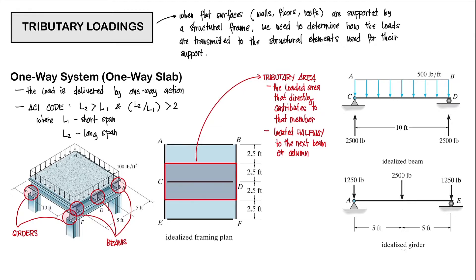So first, let's define what is a tributary loading. A tributary loading is the loading that a specific structural element supports. Your tributary loadings are defined by your tributary areas — the loaded areas that directly contribute to that member. These areas usually have boundaries located halfway to the next beam or the next column. There are generally two ways to approach this, and the choice depends on the geometry of the structural system, the material from which it is made, and the method of its construction.